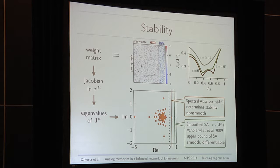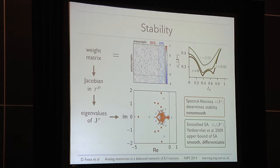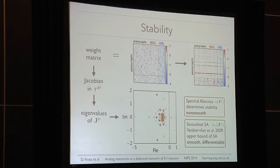We perform this optimization simultaneously for all memories we want to embed while also keeping the condition of zero velocity at the memory points. You will see what happens when we apply this algorithm to the connection matrix. In a few steps, the positive eigenvalue becomes negative, and as we continue the procedure we gain a large margin of stability in the eigenvalues. This determines a new weight matrix where separation between excitation and inhibition is preserved due to our parameter choice.